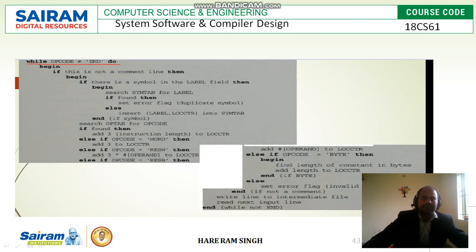We should search the symbol table for the corresponding label. If found, then set the error flag, meaning it is a duplicate — more than one instance of the same label should not be in the symbol table. If it is found, it is a duplicate symbol. Else, insert the label and its location counter value into the symbol table. End if symbol.